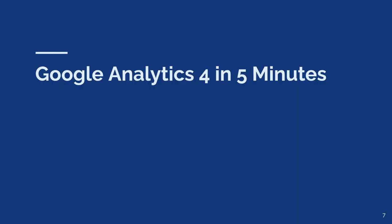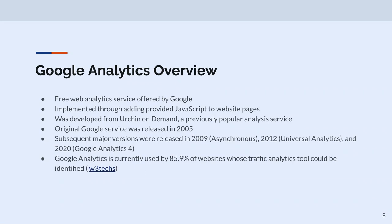Let's start with GA4 in five minutes. What is Google Analytics? It's a free service offered by Google for web analytics, implemented through JavaScript on website pages. It's kind of an evolution of Urchin on Demand, first release in 2005, gone through several versions — GA4 is the most recent, came out in 2020. Last year almost 86% of websites were using either Universal Analytics or GA4, so it is the market leader.